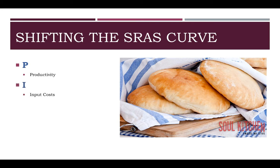The next factor is input costs. If we're talking about a falafel shop, the price of soybeans goes up — that's going to decrease aggregate supply. The number one input cost, all of you should know this by now, is nominal wage. If nominal wages go up, aggregate supply is going to decrease. And if nominal wages go down, which rarely happens, aggregate supply curve will shift to the right.